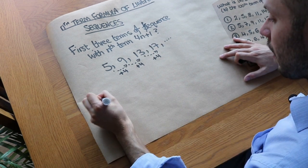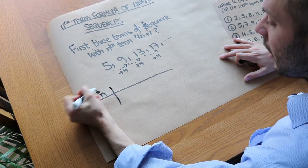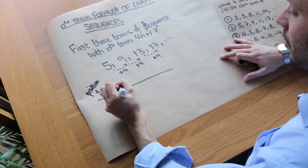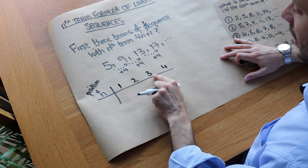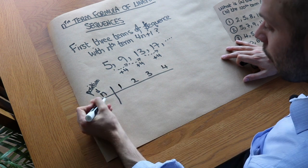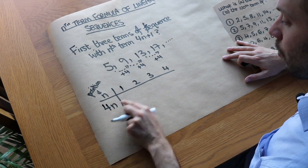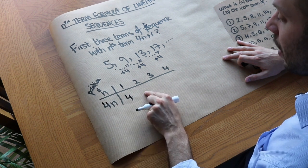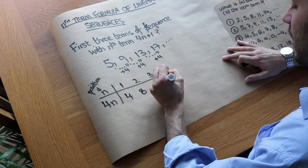What I could then do is a table. The top row is n — the position in the sequence — so I'll put 1, 2, 3, 4, representing the first, second, third, and fourth terms. The first difference is 4, so we know the formula starts with 4n. What would 4n give us? The first term would be 4 times 1, which is 4. The second term would be 4 times 2, which is 8. Then it would be 12, then 16.